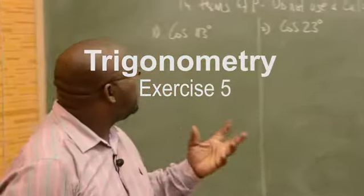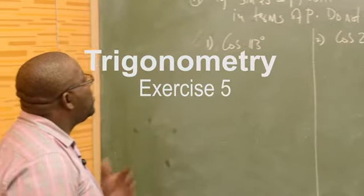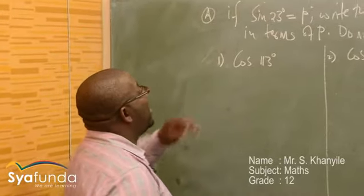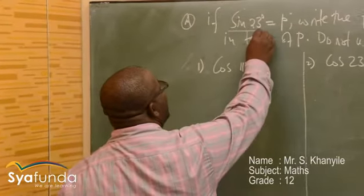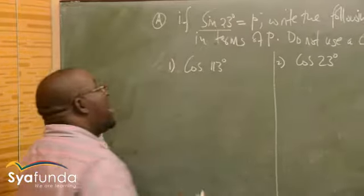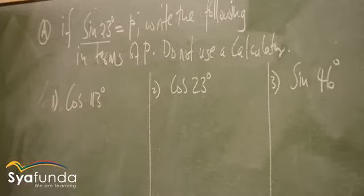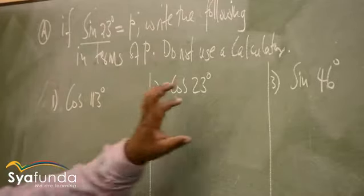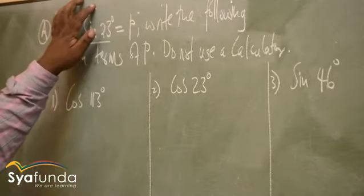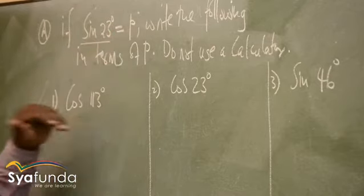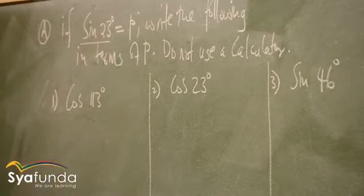Right, these are also some types of problems where you've given a particular angle. You're given that sine 23 is equal to P. Write other ones in terms of that. So what is this saying to us? I've got to change all this such that I've got sine 23. Because at sine 23, as long as there's P in these problems, then you'll be sharp.